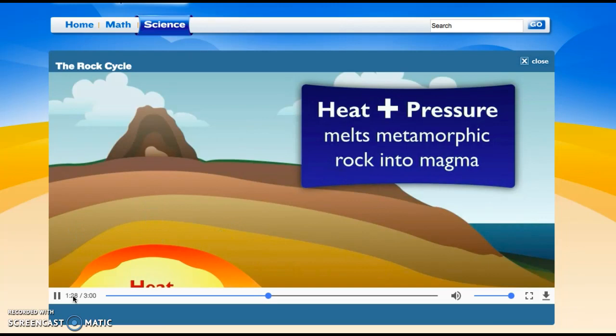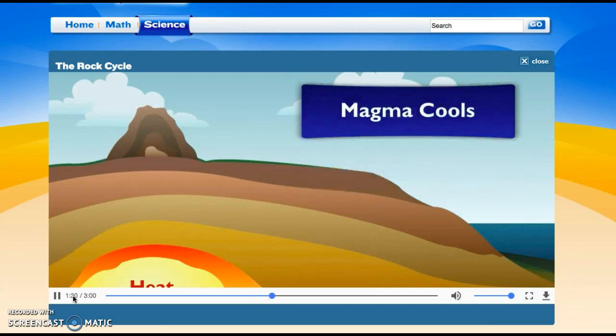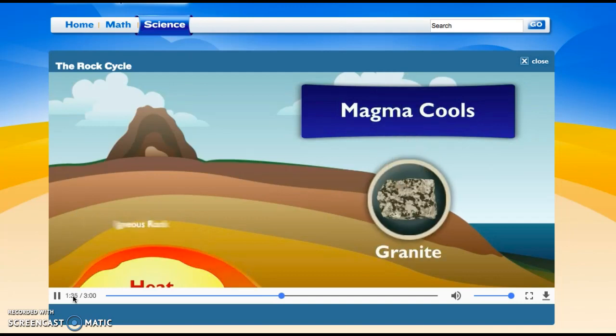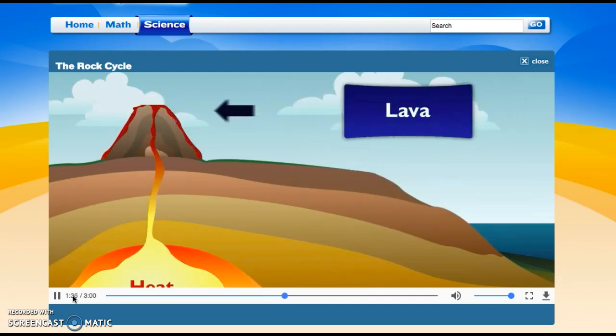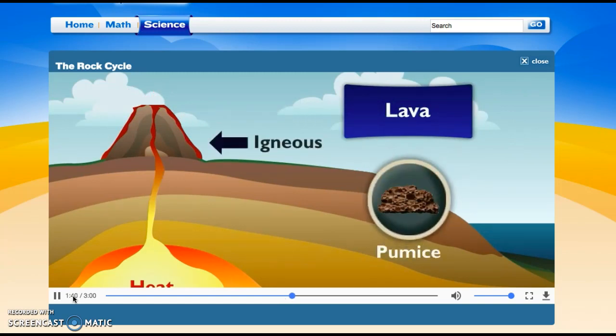Yeah, but it also cools. When that magma cools off inside the Earth, it hardens and becomes igneous rock, like granite. Other times magma from a volcano as lava, when it cools, that's igneous rock too, like pumice. What happens next? Now I'm all into this.